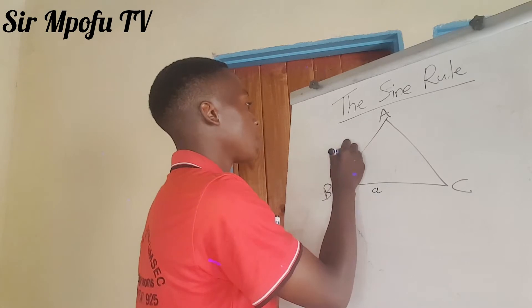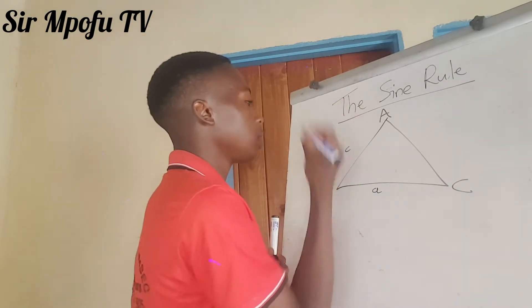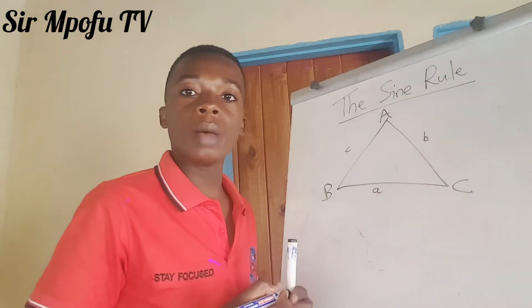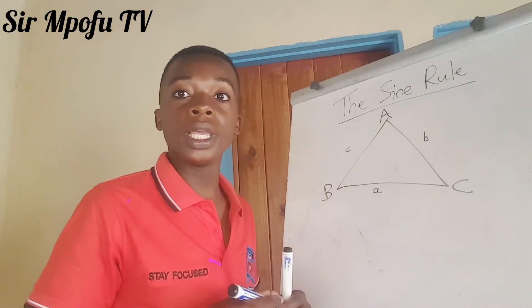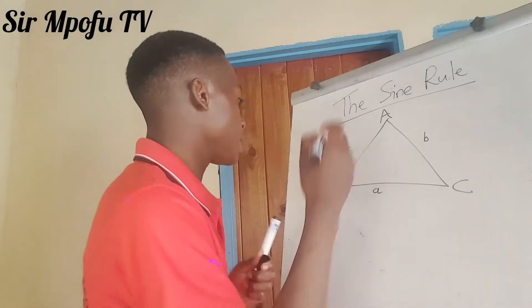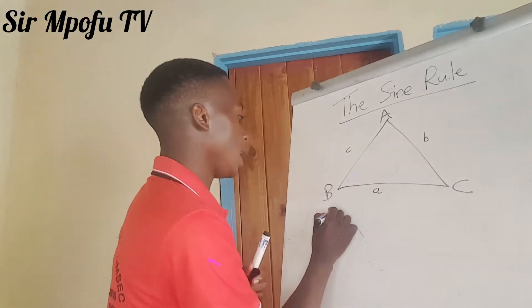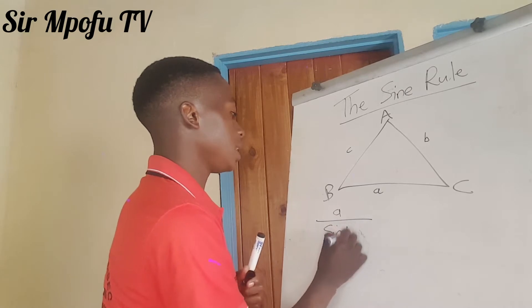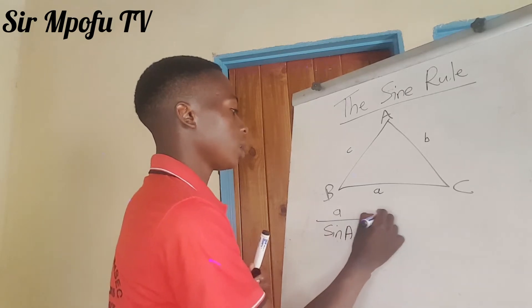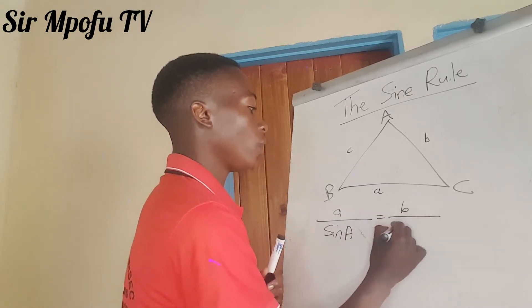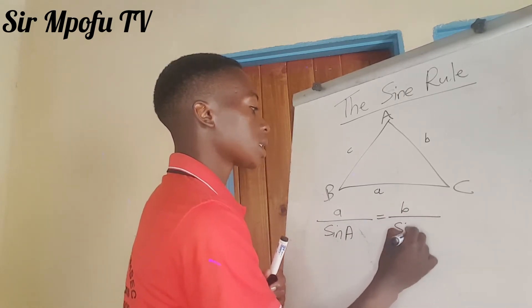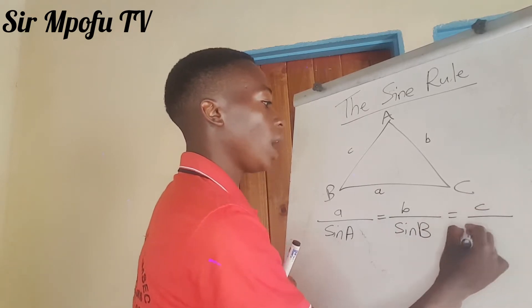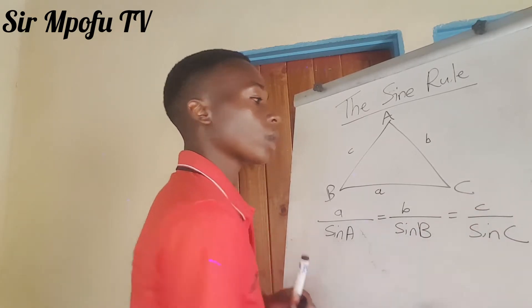If this is angle C, this side becomes side C. If this is angle B, the opposite side becomes side B. And the sine rule says that A over sine A is equal to B over sine B, which is equal to C over sine C.